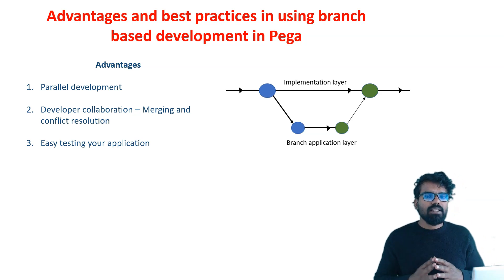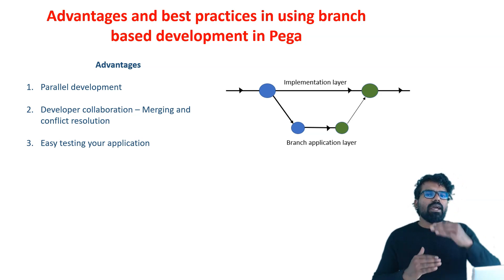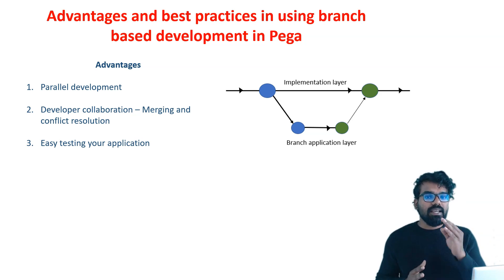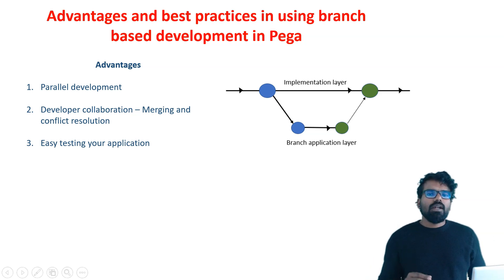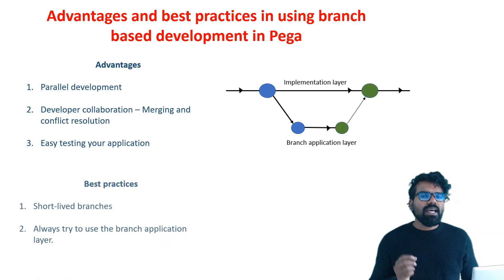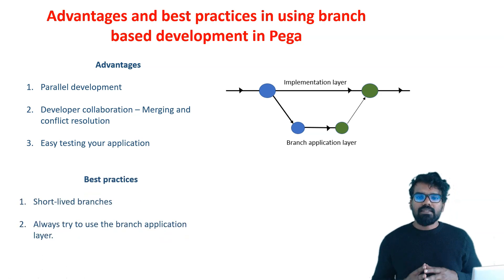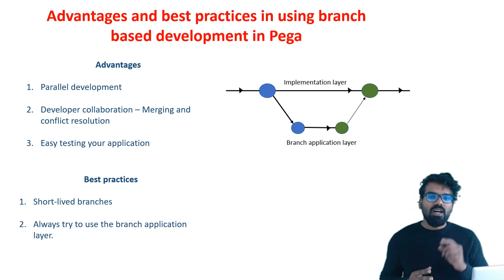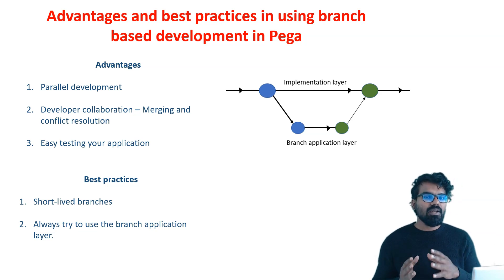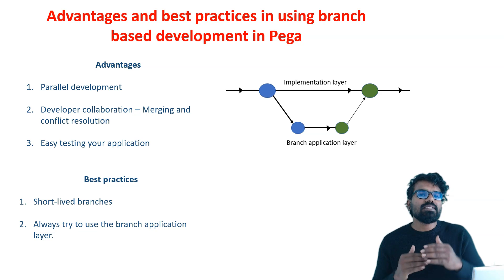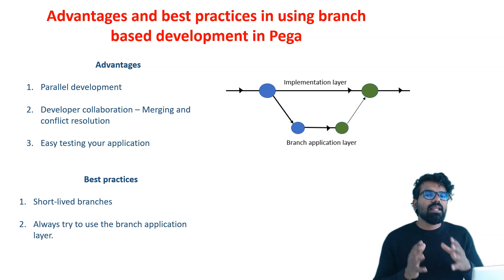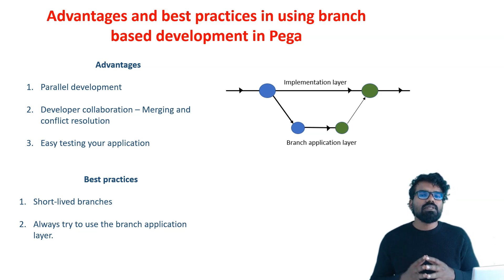Currently we have only an implementation layer, but in real time you may have many layers. Deciding at which layer you want to push your source code is a key criteria. Now let's talk about some best practices of using branch based development. The first best practice is short-lived branches. In trunk based development, they say you can use short-lived branches — similarly, Pega also recommends using short-lived branches.